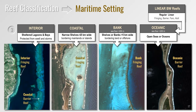The third step divides linear breakwater reefs according to four main maritime settings. First are interior reefs in enclosed lagoons or bays protected from open ocean swell and storm waves. Second are coastal reefs on narrow shelves less than five kilometers wide bordering mainlands or islands. Third are bank reefs on shelves wider than five kilometers or offshore banks — examples include the Campeche Bank in the Gulf of Mexico and the Bahama or Chinchorro Banks. Fourth are oceanic reefs in deep sea areas where there are no shelves and the seafloor quickly slopes into waters greater than 200 meters deep.